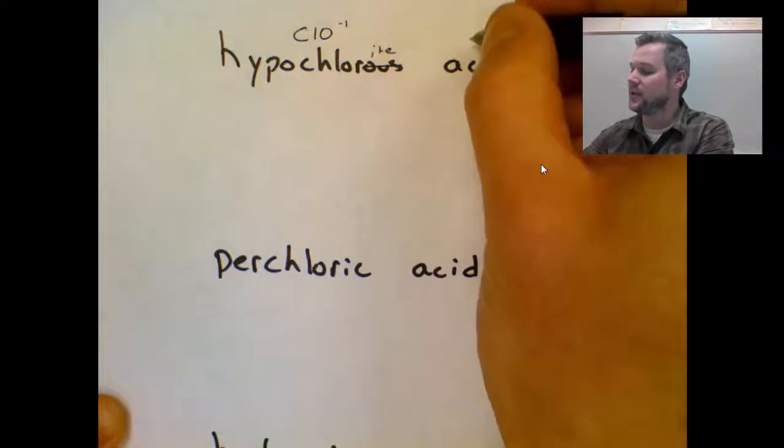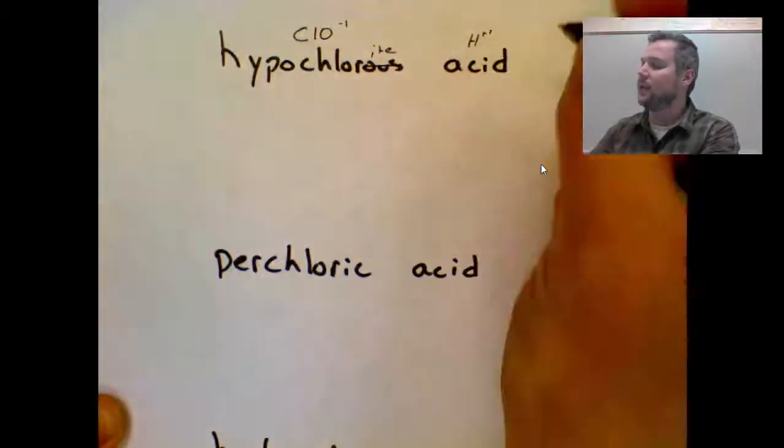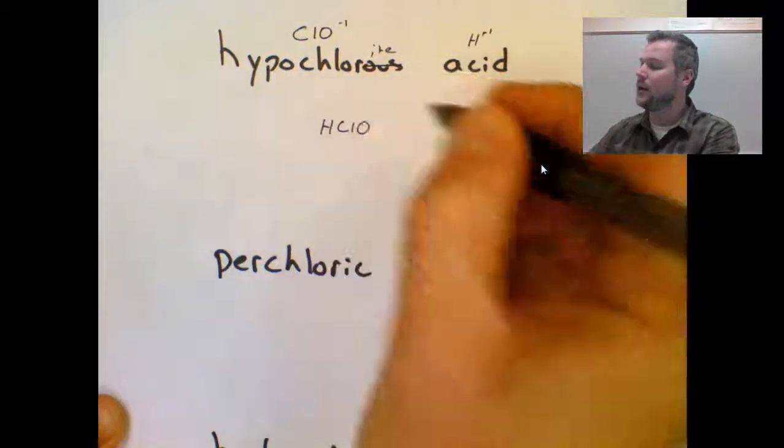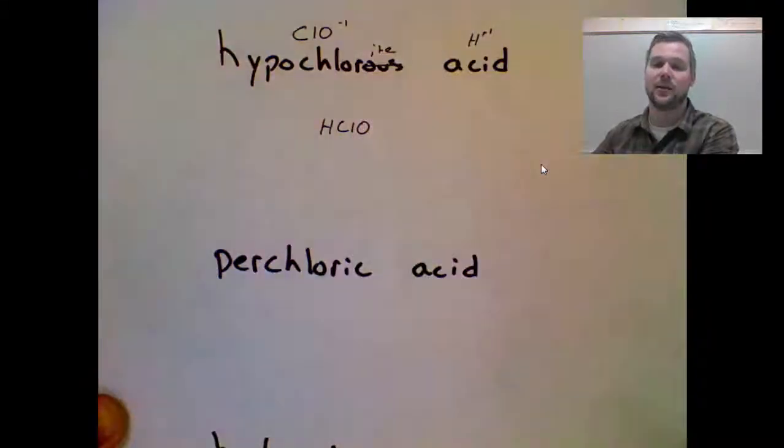Acid represents the hydrogen ion. Now we have to put the H plus on the beginning of your formula. So it's HClO plus one minus one. I do not need to crisscross, but you do need to check for crisscrossing in acids.